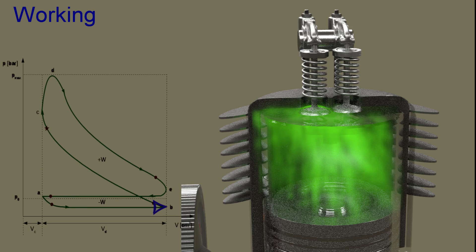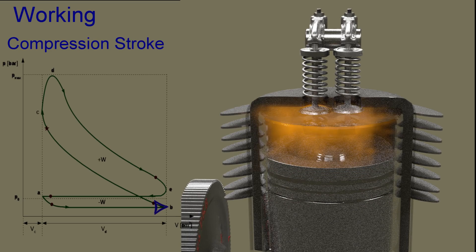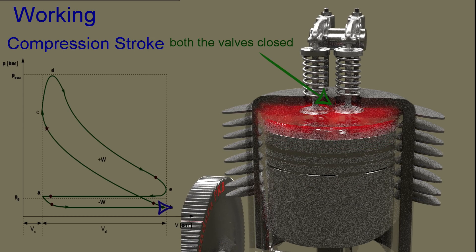The engine continues its motion due to inertia of moving parts and compression stroke begins. In compression stroke, both the valves are closed and charge is compressed as piston moves from bottom dead center to top dead center. As a result of compression, the pressure and temperature of charge increases to high value.